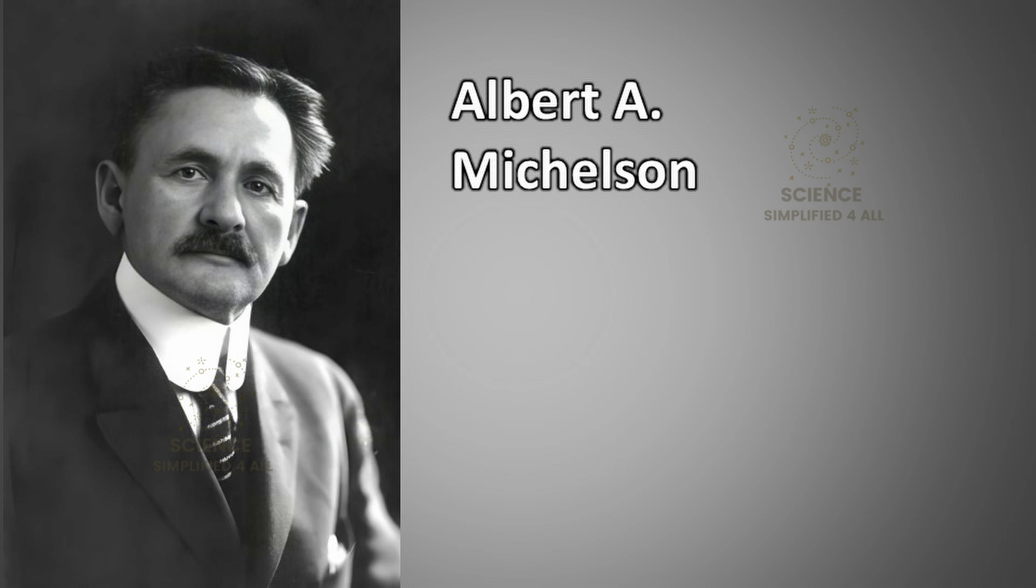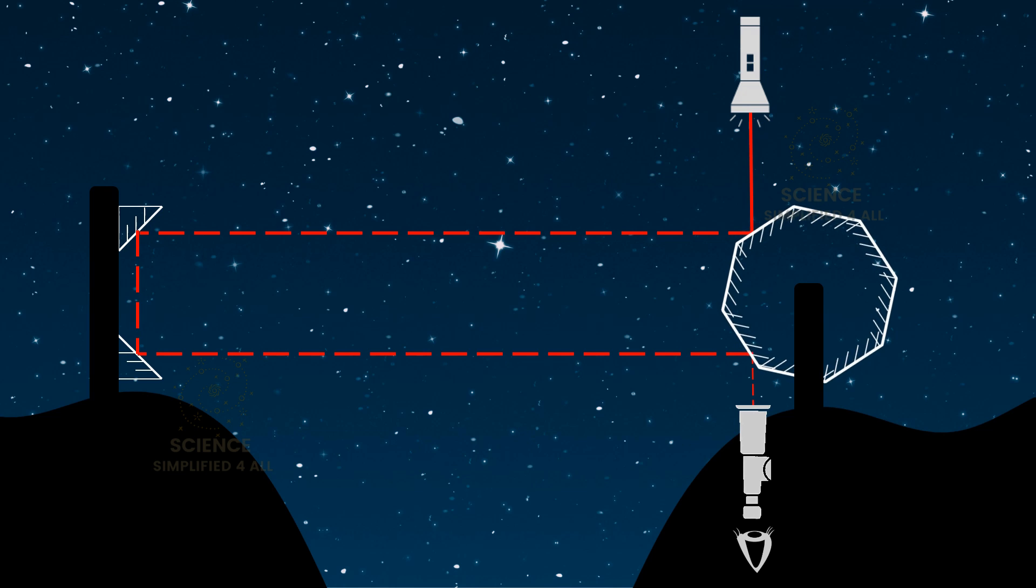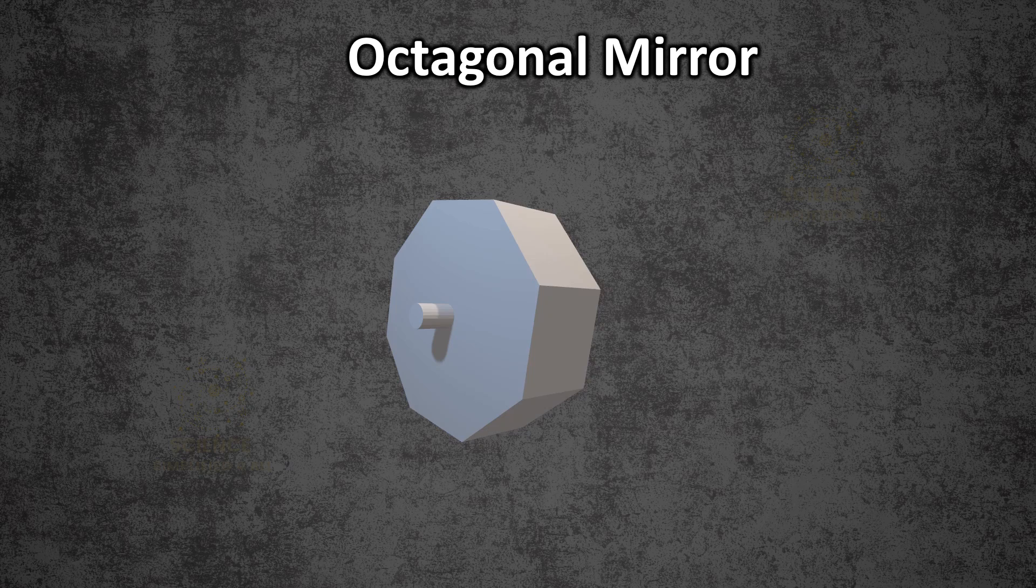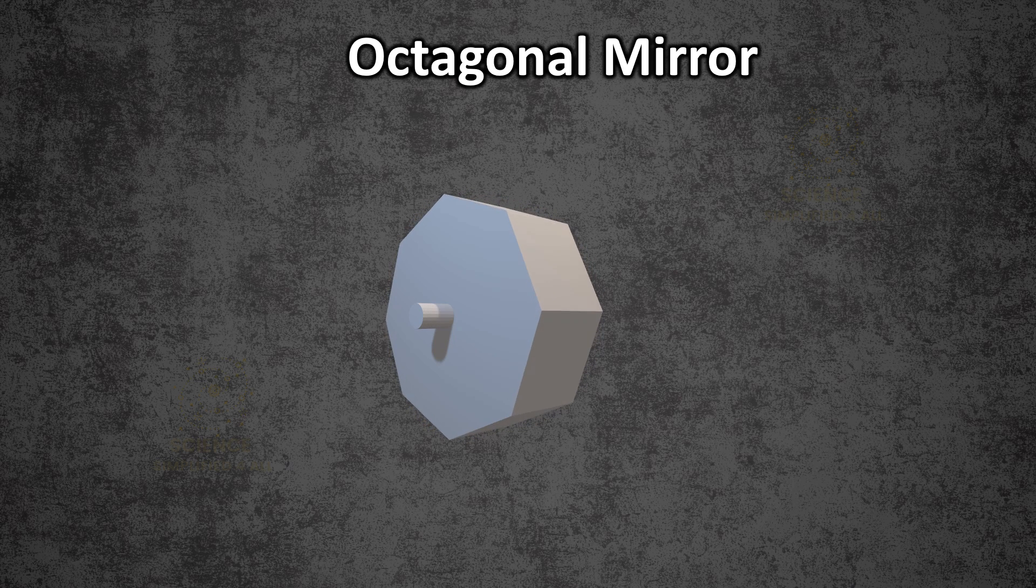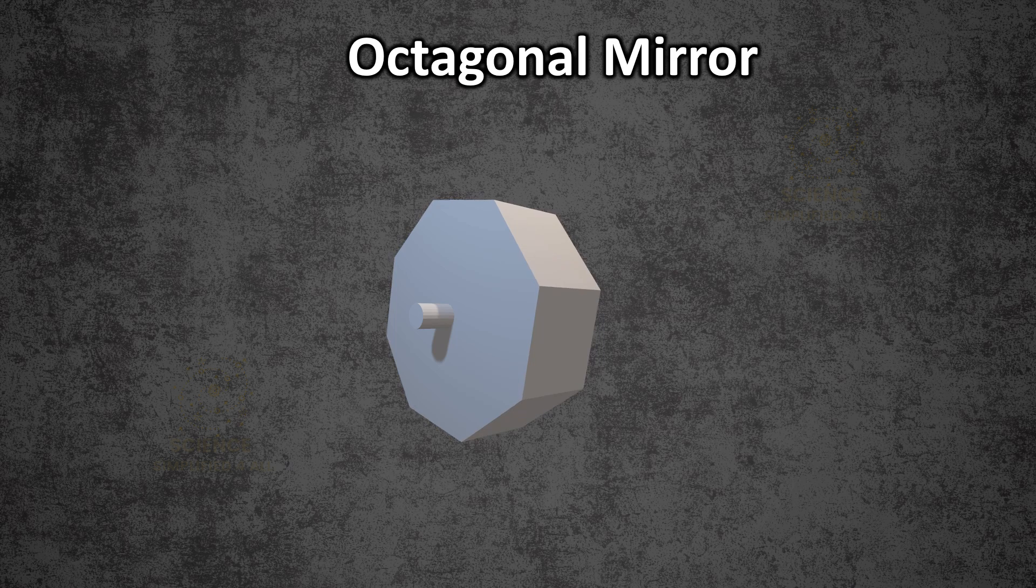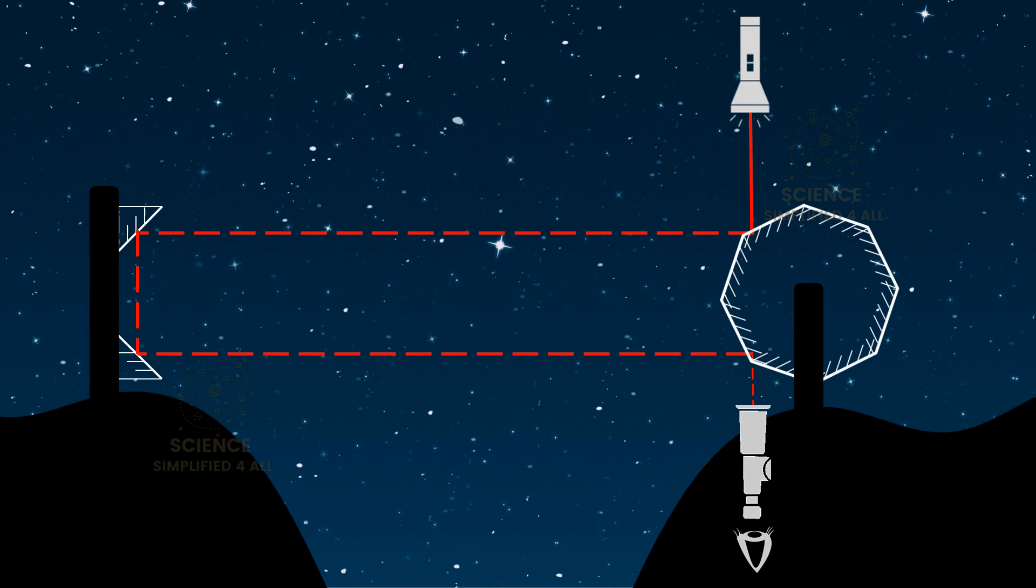Michelson's efforts to measure the speed of light spanned decades, from 1877 to 1931, as he worked tirelessly to achieve more accurate results. Among his many experiments, one stands out as particularly ingenious and groundbreaking. In 1926, Michelson used a rotating octagonal mirror, a mirror with eight faces, to measure the speed of light with unprecedented accuracy. This experiment provided the most precise value for the speed of light at that time.